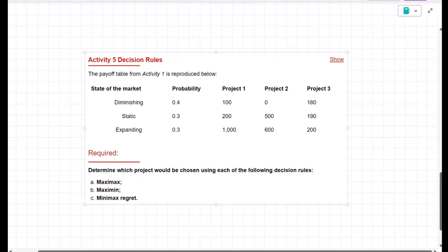Let's look at the requirement. Determine which project would be chosen using the three decision rules: maxi max, maxi min, mini max regret.